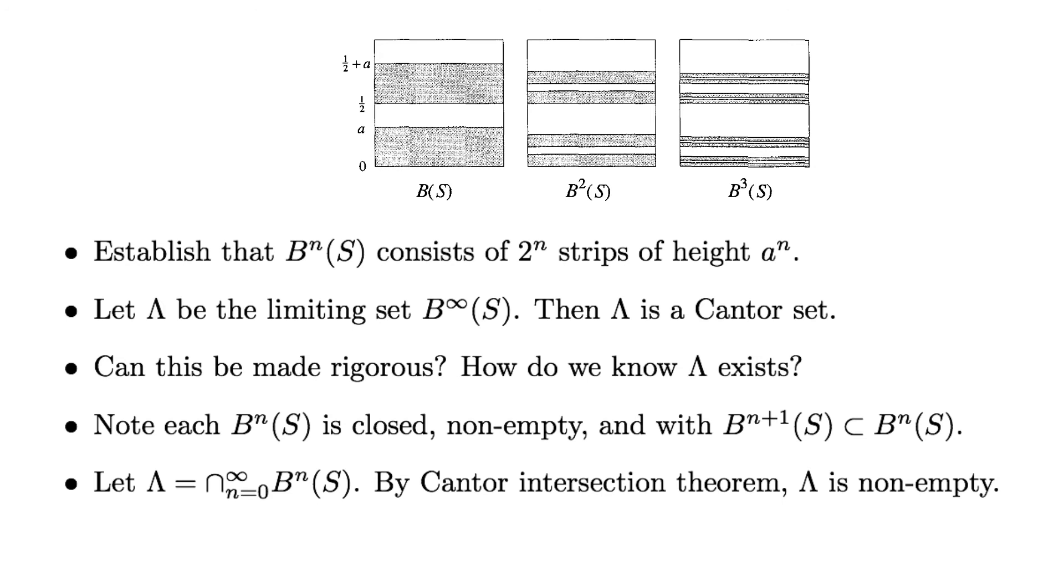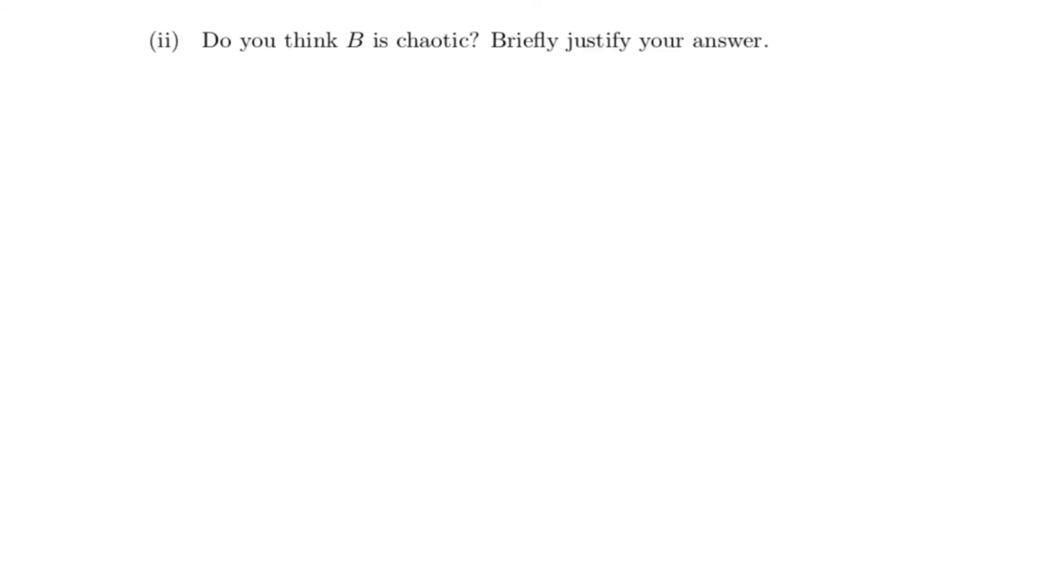You can make this rigorous and show that lambda does exist. For each N, note that B to the N of S is a closed, non-empty set, with B to the N plus 1 of S a subset of B to the N of S. So if we let lambda be the infinite intersection of all the B^N of S's, then by the Cantor intersection theorem, lambda is non-empty. So that concludes the first part of the question.